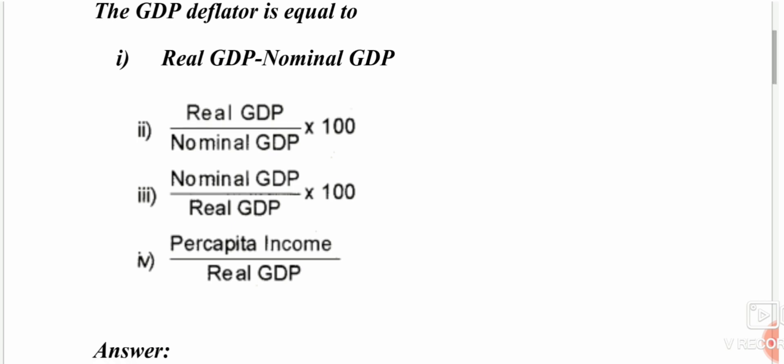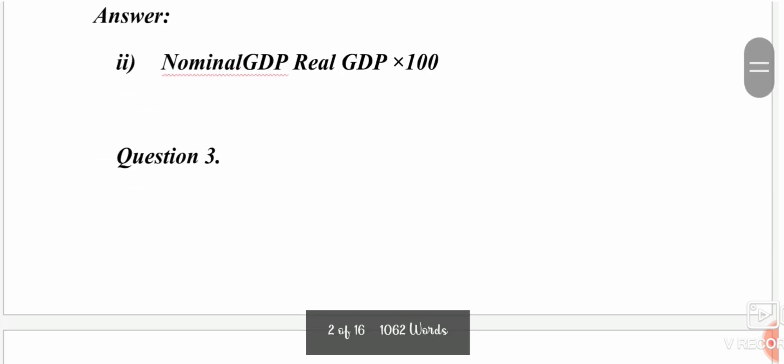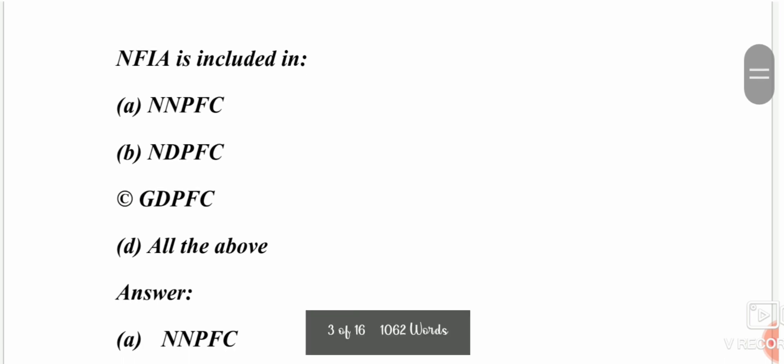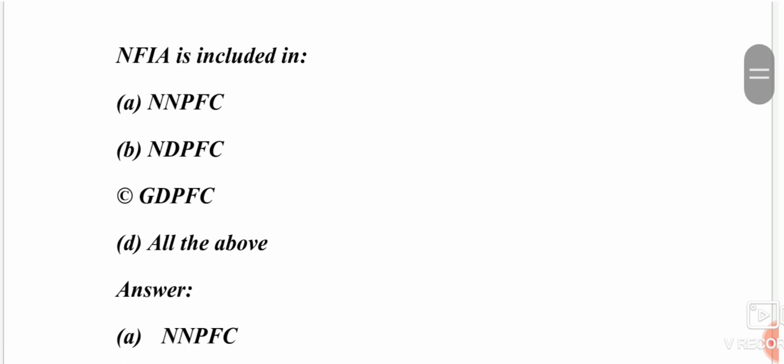The next question: NFIA — net factor income from abroad — is included in which of the following? Options: NNPFC, GDP, GNP, or all of the above. The answer is NNPFC — national product at factor cost.